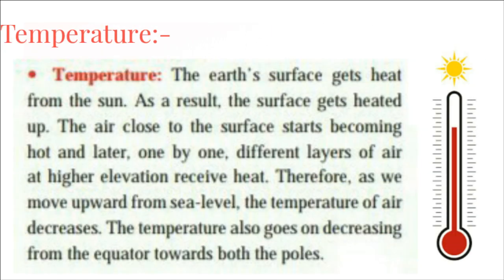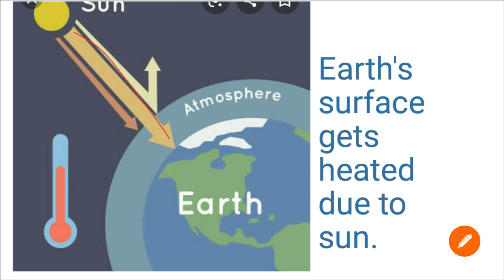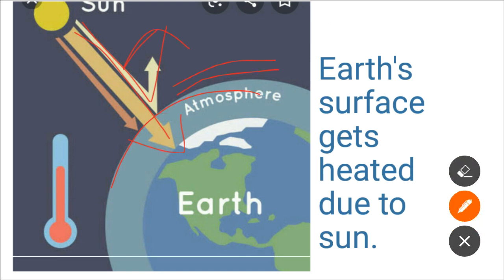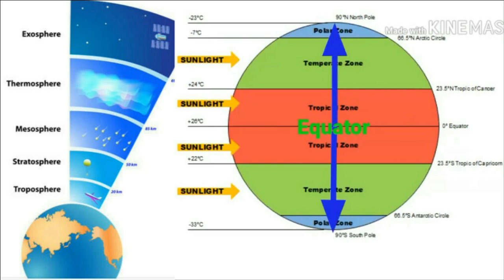First of all, temperature. The earth's surface gets heat from the sun, and as a result the surface gets heated. The air close to the surface of the earth starts becoming hot, and then one by one the different layers of air at higher elevations receive heat. Therefore, as we move upward from sea level, the temperature of the air decreases.